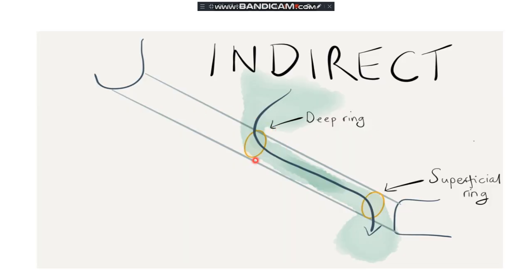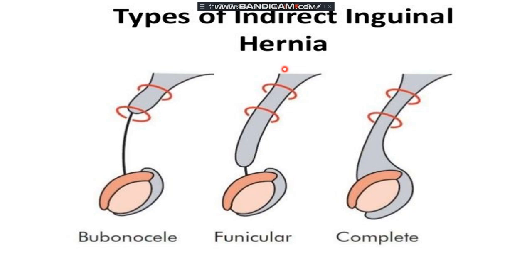Here is a pictorial representation. You can see the canal with the deep ring and the superficial ring. The contents are coming out from the deep ring, not from the superficial ring — the superficial ring is secondarily involved. The defect is within the deep ring. There are certain types of indirect inguinal hernia: bilonocele, funicular, and complete. In bilonocele, the content crosses the deep ring but does not cross the superficial ring.